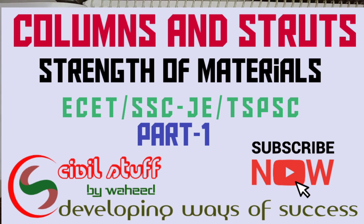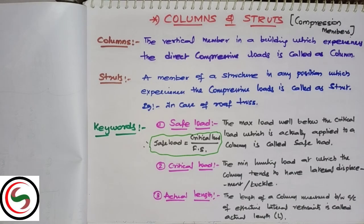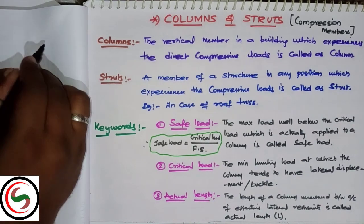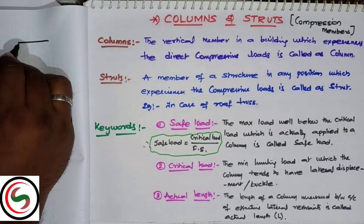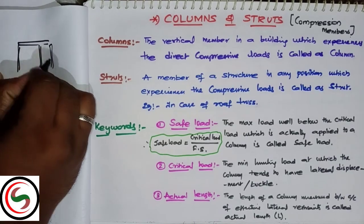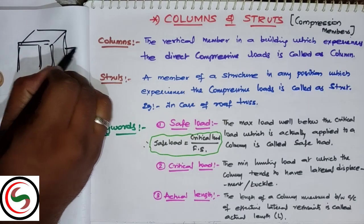Coming to what are these columns: generally, a column is nothing but a vertical member in a building which experiences direct compressive loads. So one of the framed structures is called the building.